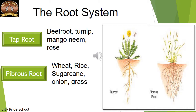Examples of the tap root system include beetroot, turnip, mango, neem, and rose — all these plants have a tap root system. Whereas other plants like wheat, rice, all the grains, sugar cane, onion, and grass all have a fibrous root system.